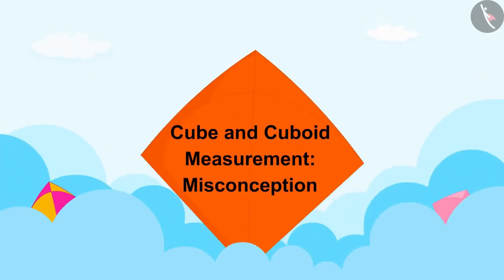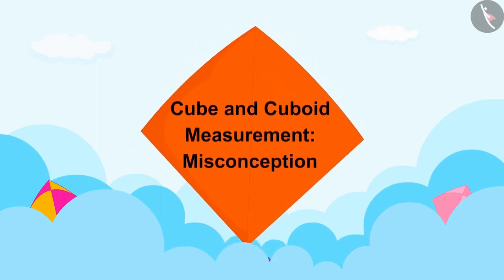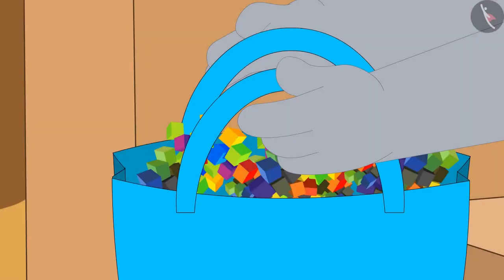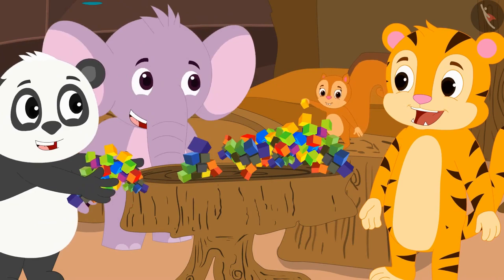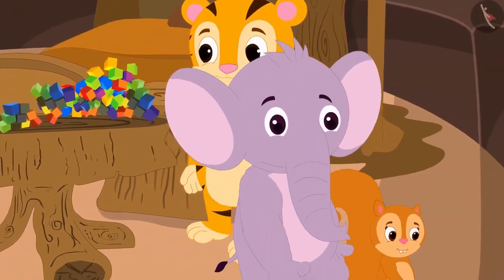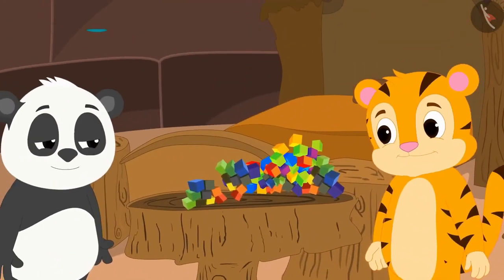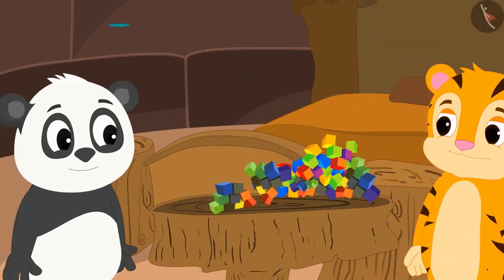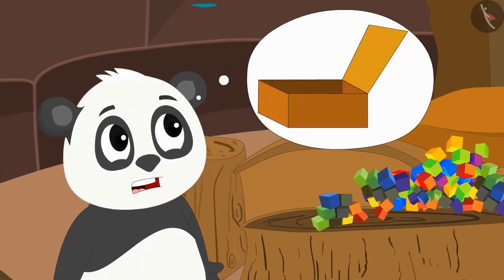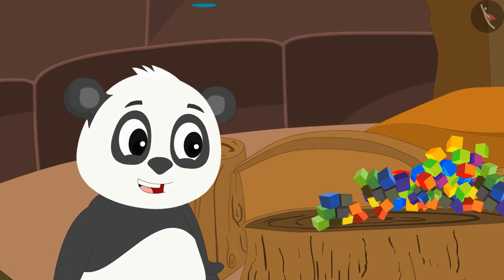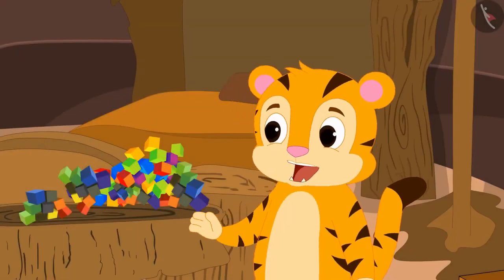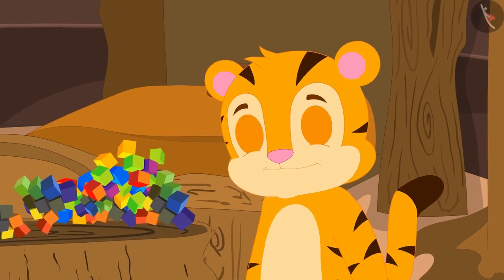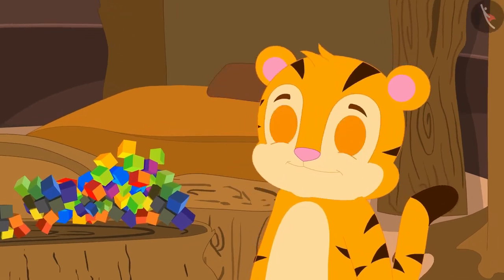In this video, we will look at some of the misconceptions related to the cube. Golu bought a lot of 1 cm cube blocks from Gagu's shop and played with friends. Now Golu wants to fill those blocks back in boxes. Sheer Khan offers to help and brings a cube shaped box and a cuboid shaped box.